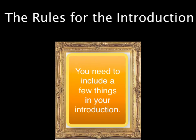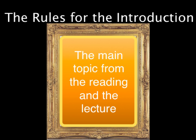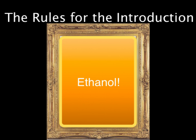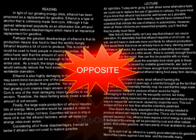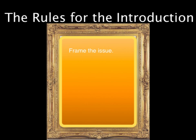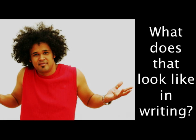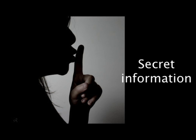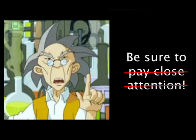Here are the rules. You must frame the issue. To do that, you need to include a few things in your first paragraph — the introduction. You need the main topic from both the reading and the lecture. In our example from the previous video, this was ethanol. You must include the connection between the lecture and the article — the reading and lecture will always disagree, and that is your connection. You must also write the main idea from both the reading and the lecture. This is important information, so pay close attention — it's better if you write down and memorize what I'm about to show you.